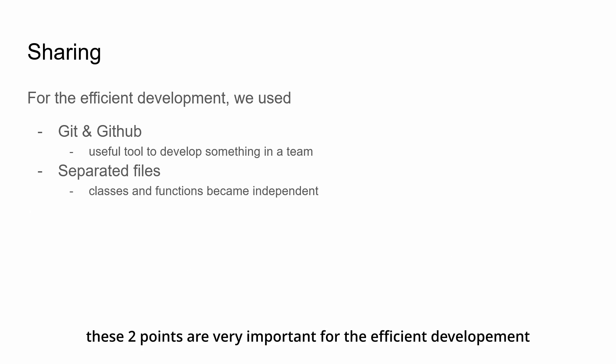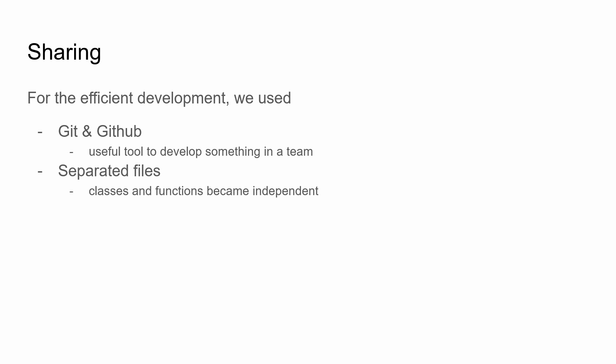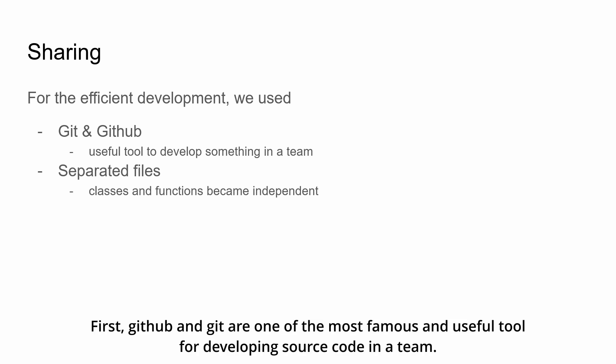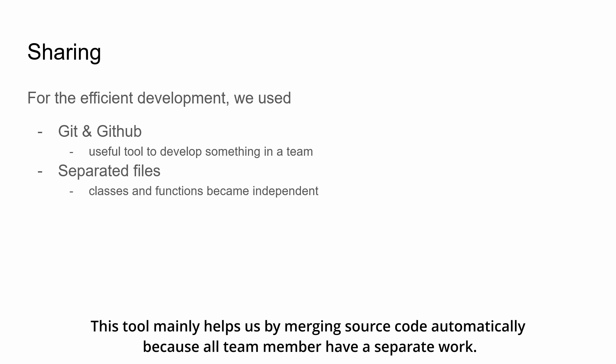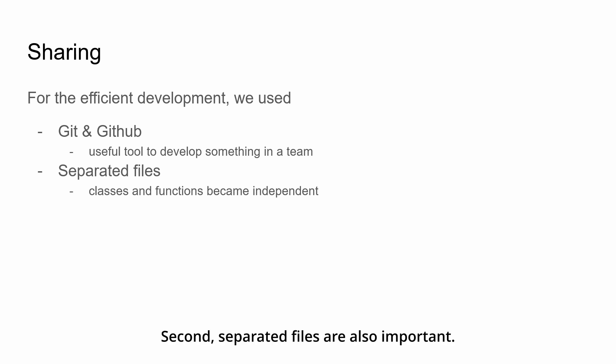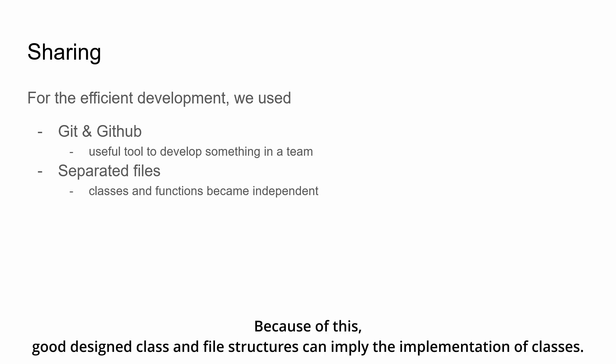These two points are very important for efficient development. First, GitHub and Git are one of the most famous and useful tools for developing source code in a team. This tool mainly helps us by merging source code automatically, because all team members have separate work. Second, separated files are also important. Because of this, good design classes and file structures can simplify the implementation of classes.